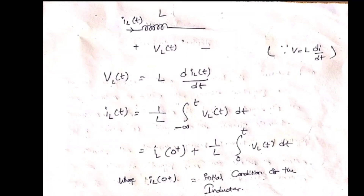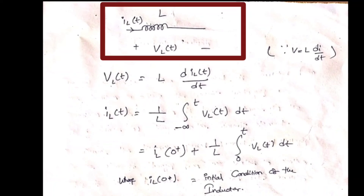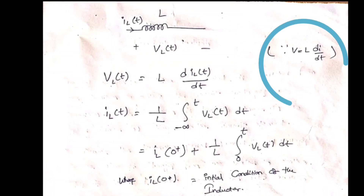You have already studied in FEC — fundamentals of electric circuits — what is an inductor and capacitor. An inductor stores energy in the form of an electromagnetic field and opposes the change in current. When current increases, the inductor tries to decrease it and transient occurs. The voltage relationship of the inductor is: v_L(t) = L × di/dt.